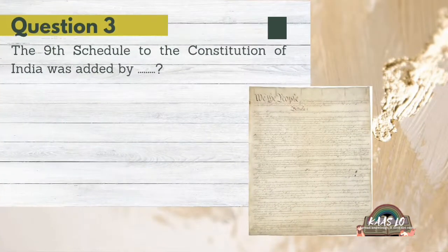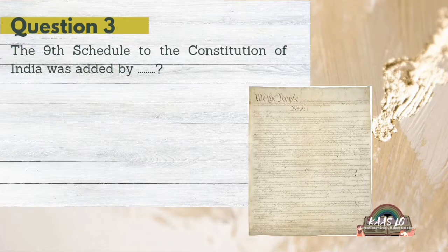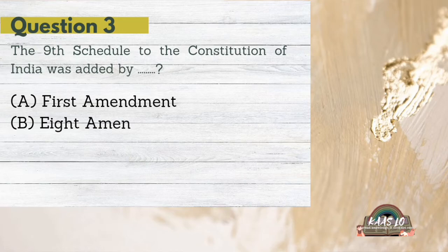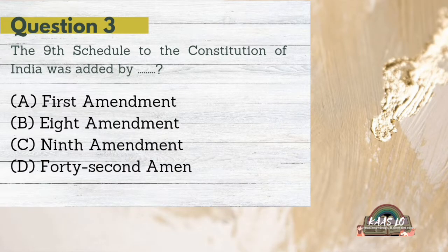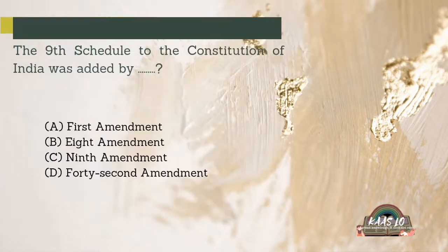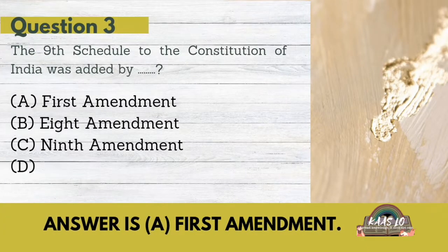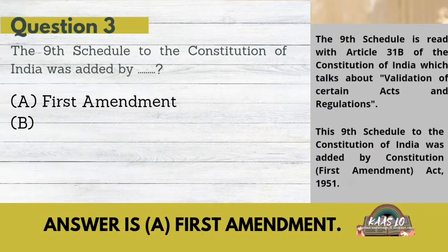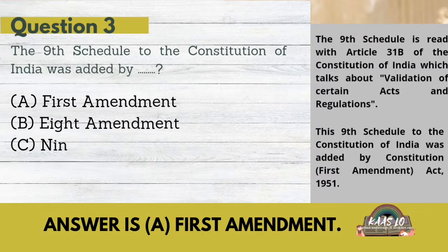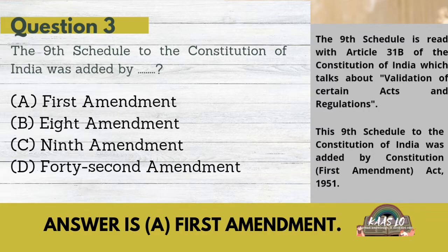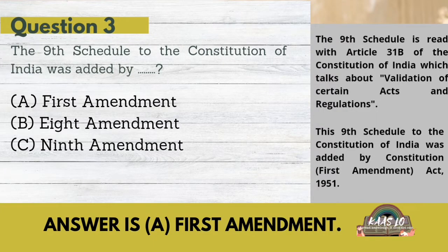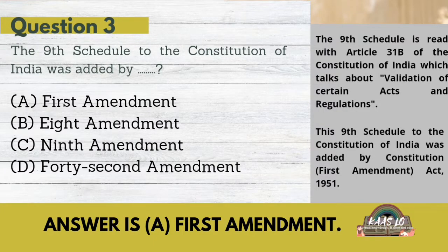The next question is: The Ninth Schedule to the Constitution of India was added by — A. First Amendment, B. Eighth Amendment, C. Ninth Amendment, D. 42nd Amendment. The answer is A. First Amendment. The Ninth Schedule to the Constitution of India was added by the Constitution (First Amendment) Act, 1951, and is read with Article 31B of the Constitution, which talks about validation of certain acts and regulations.